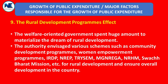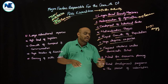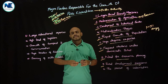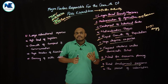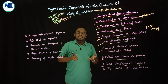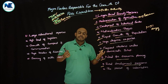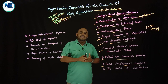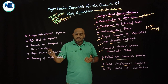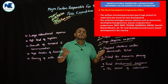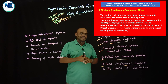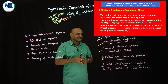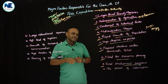The ninth point is rural development programs. There are lots of programs for the development of rural areas, such as MGNREGA — Mahatma Gandhi National Rural Employment Guarantee Act — rural sanitation programs, and rural employment generating programs. Loads of programs being introduced also led to the growth of public expenditure.